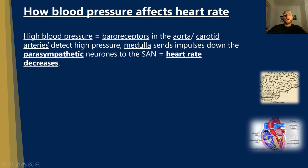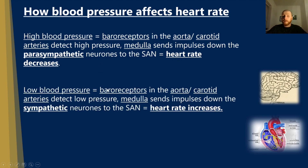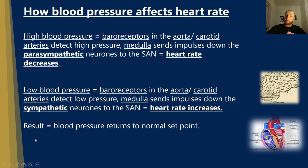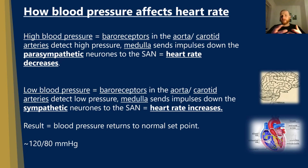High blood pressure is detected by baroreceptors in the aorta or carotid arteries. The medulla sends an impulse down the parasympathetic neuron to the sinoatrial node, leading to heart rate decreasing. If there's low blood pressure, baroreceptors detect it and the medulla sends impulses down the sympathetic neurons to the sinoatrial node, increasing heart rate. Blood pressure then returns to the normal set point. Normal blood pressure is about 120 over 80 — 120 is the systolic pressure (ventricles contracting) and 80 is the diastolic pressure (ventricles relaxed), measured in millimetres of mercury.